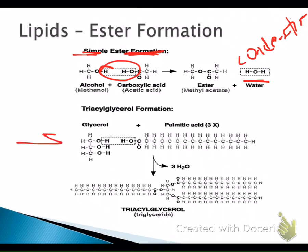Here's a further example: we take glycerol and three palmitic acids to form a triglyceride. You can see how the linkage happens — each time it links, we get a water, so in the end three water molecules are formed. The end result is a triglyceride. They're shaped with two fatty acid tails going one direction and the third going the opposite direction, because there's simply no room to fit all three palmitic acids in the same direction. This is a very common triglyceride found in the body.